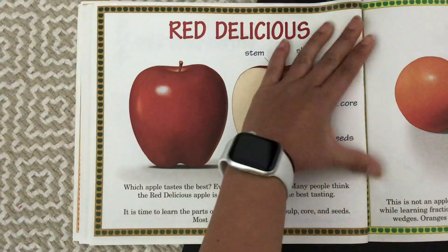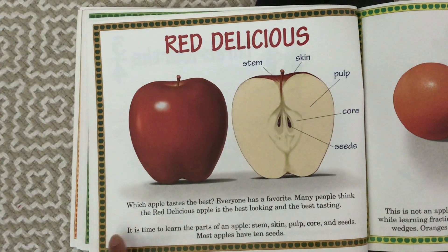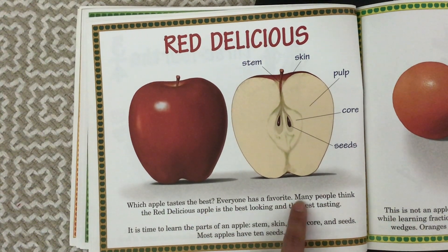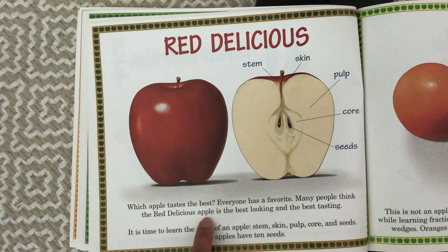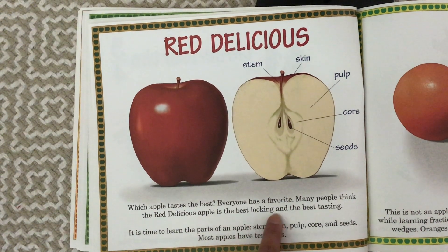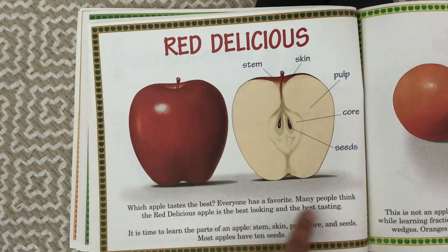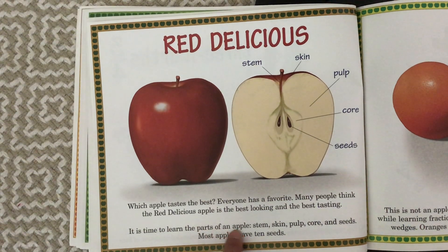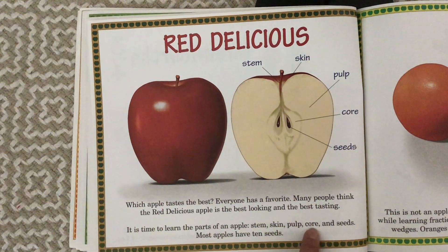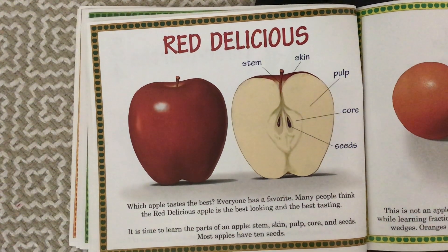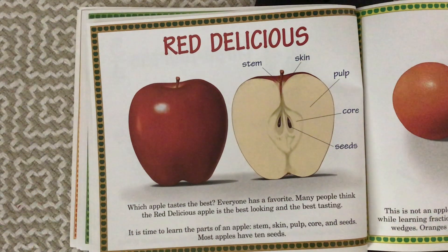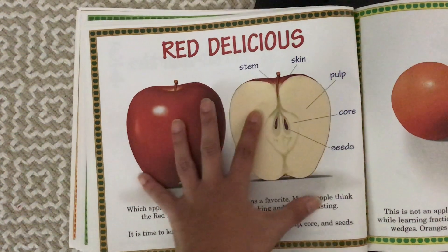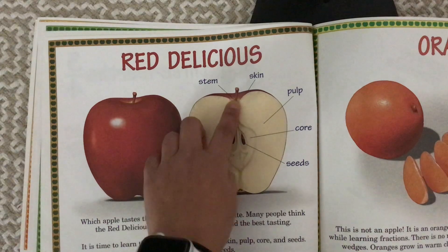Red Delicious. Which apple tastes the best? Everyone has a favorite. Many people think the Red Delicious apple is the best looking and the best tasting. It is time to learn the parts of an apple: stem, skin, pulp, core, and seeds. Most apples have ten seeds. So if you look at this diagram, they also label the parts of the apple.